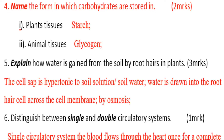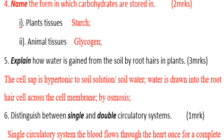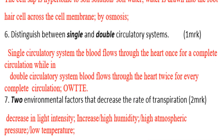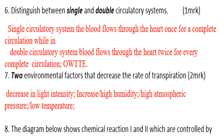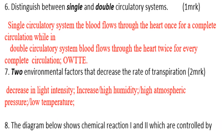Distinguish between single and double circulatory systems. In a single circulatory system, blood flows through the heart once for a complete circulation. While in a double circulatory system, blood flows through the heart twice for every complete circulation.